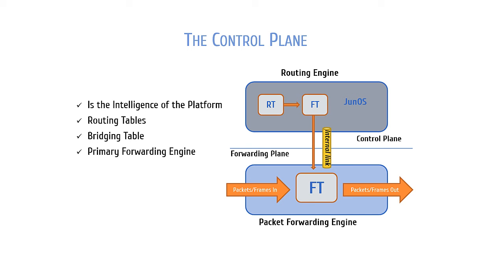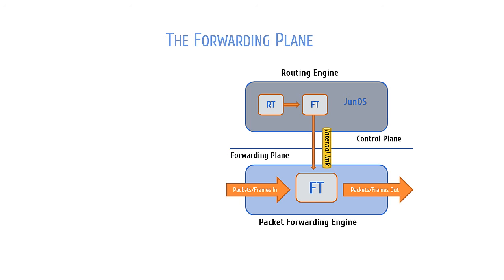The forwarding plane is ASIC based because it offers better performance for extremely fast execution of packet forwarding. Just keep in mind that the forwarding plane does all the leg work in moving all the packets and frames around.